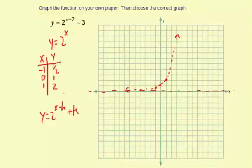Now because we have an x plus 2 and an x minus h, it's going to be a shift to the left. It's going to be 2 left. And the minus 3 for the k means 3 down.